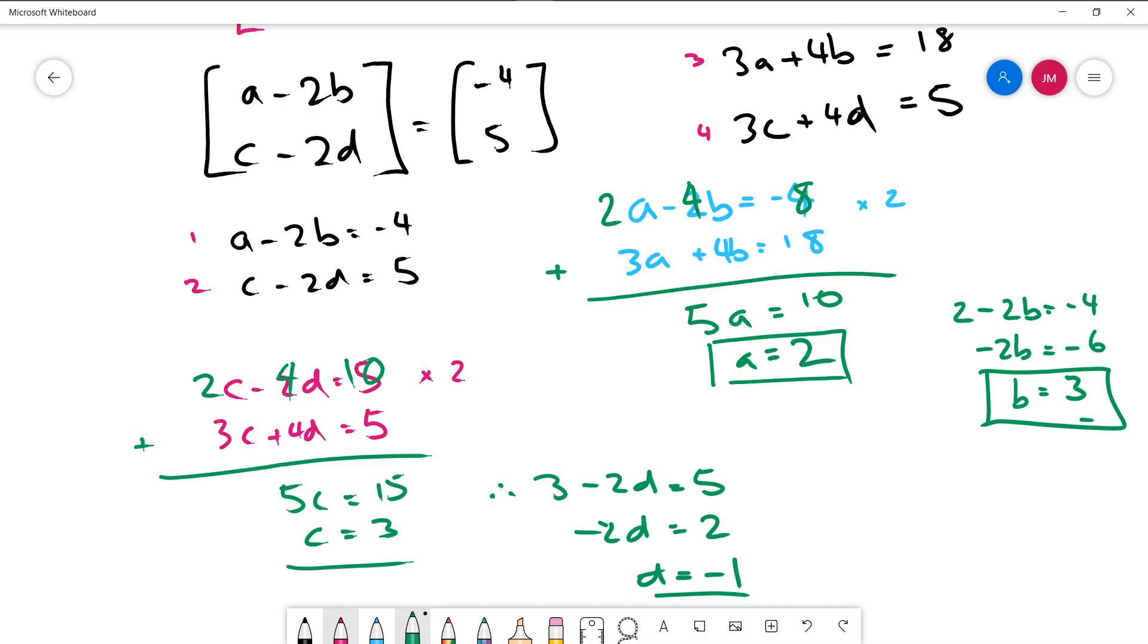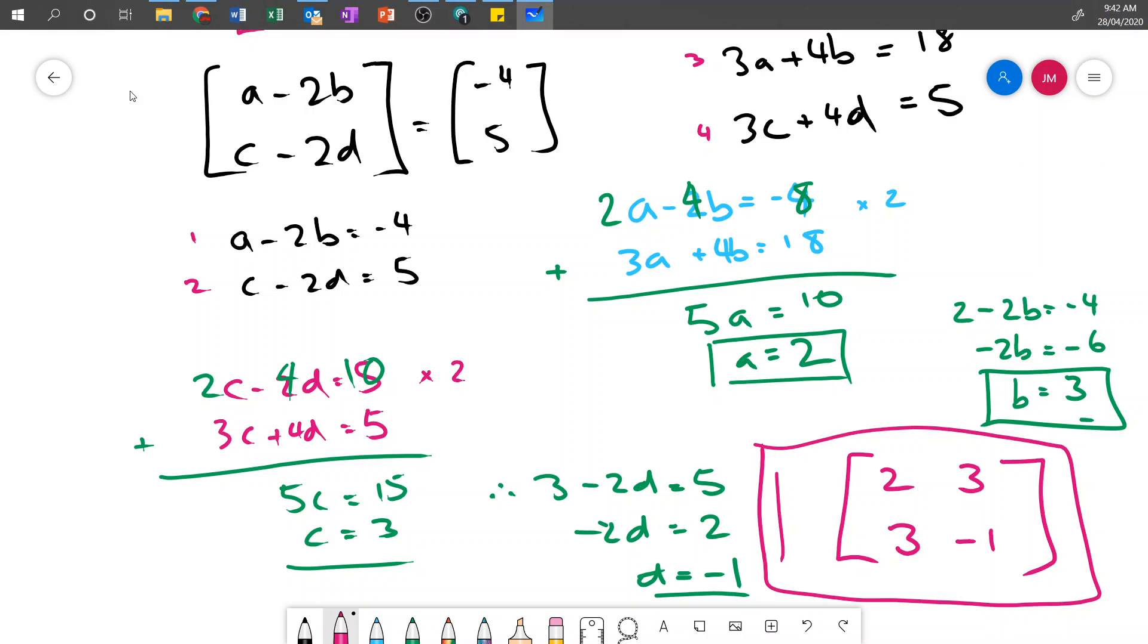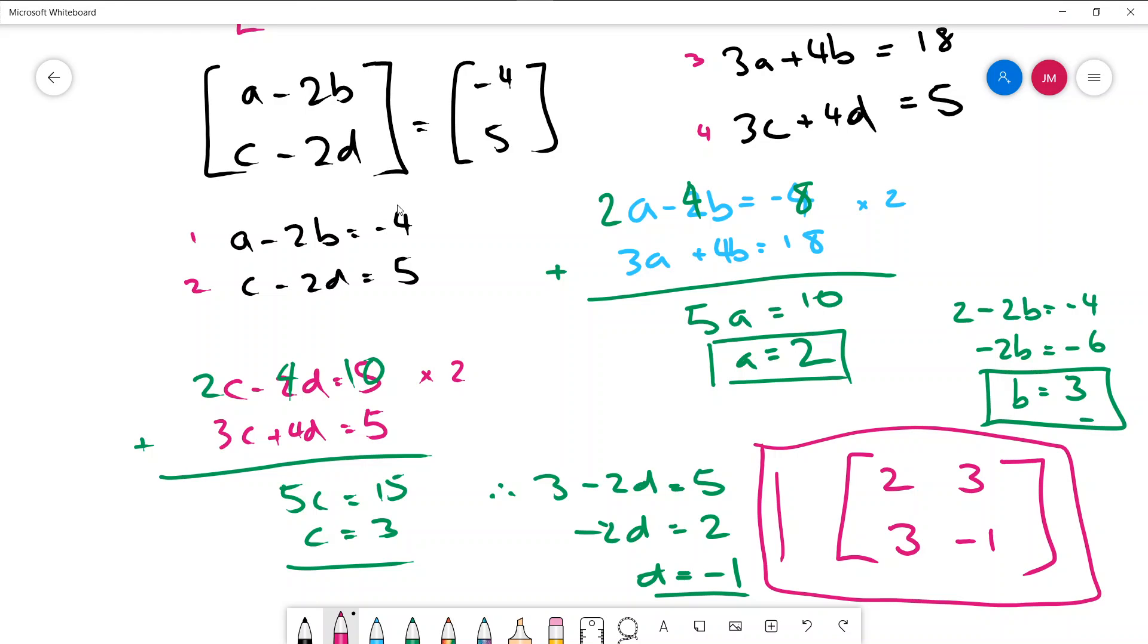So finally let's just chuck that all back into my matrix. So A was 2, B was 3, C was 3, and D was negative 1. Lots of work for that question to find that transformation matrix. But the first thing is to always just set up your equations at the top here. And then once you multiply them through it's just a little bit of simultaneous equations practice.